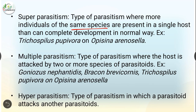Multiple parasitism is the type of parasitism where the host is attacked by two or more species of parasitoid. Example: Goniozus nephantidis and Bracon brevicornis, and Trichospilus pupaevorax on Opisina arenosella. Hyperparasitism is the type of parasitism in which a parasitoid attacks another parasitoid.